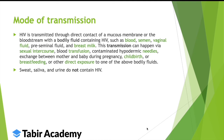How does HIV transmit to other people? Via sexual intercourse, blood transfusion, contaminated needles, mother-to-baby exchange during childbirth when delivery takes place through the birth canal, or breastfeeding. Apart from those routes, there is no transmission. In sweat, saliva, and urine there is no HIV.